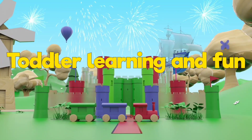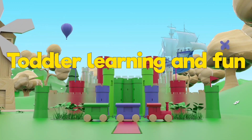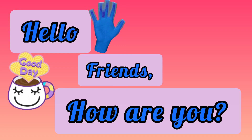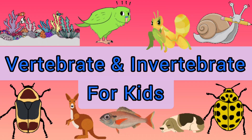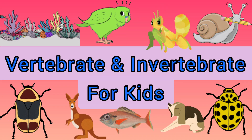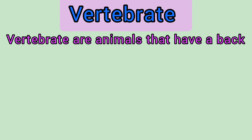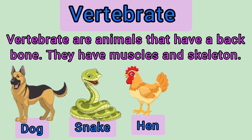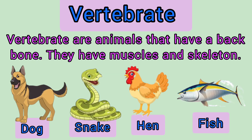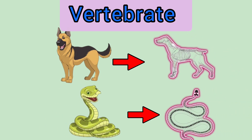Hello kids, how are you today? We are going to learn about vertebrates and invertebrates for kids. Let's get started. Vertebrates are animals that have a backbone. They have muscles and a skeleton, like dogs, snakes, humans, and fish.